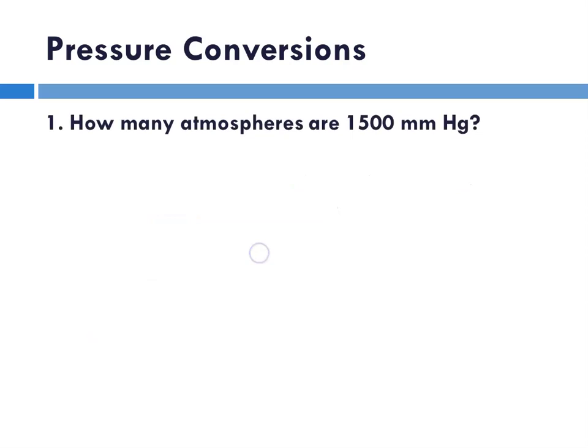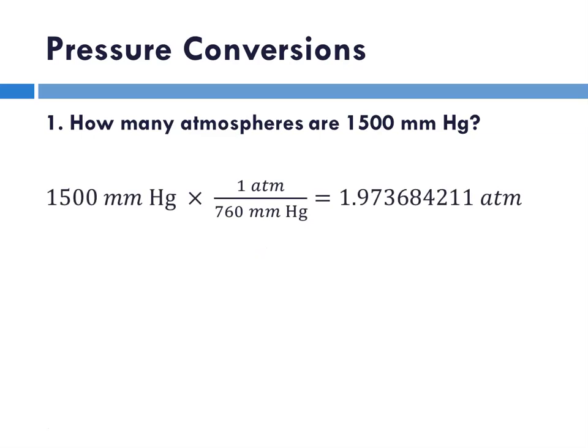So continuing. Number one on that page asked how many atmospheres are 1,500 millimeters of mercury. We always start with the given here, 1,500 millimeters of mercury. Then we multiply by our conversion factor.